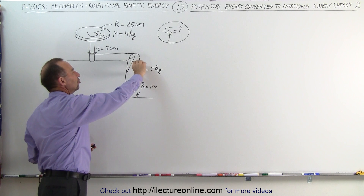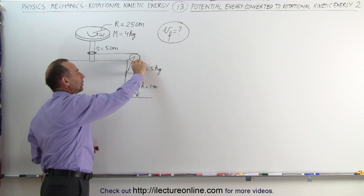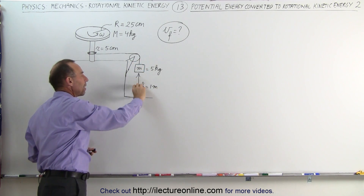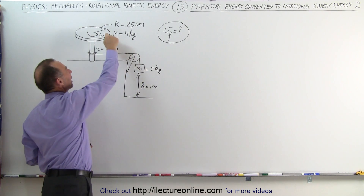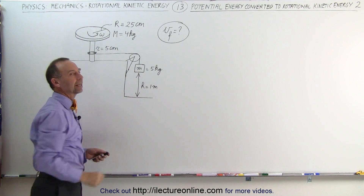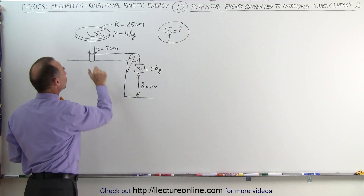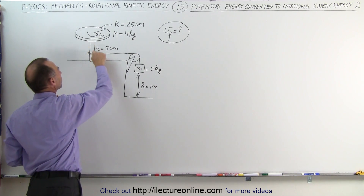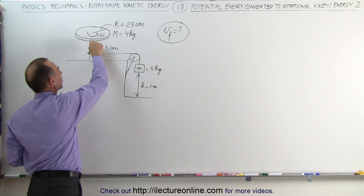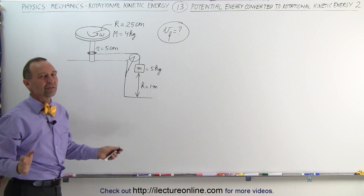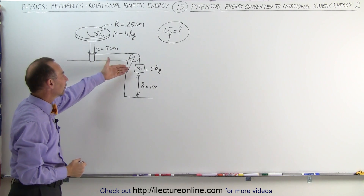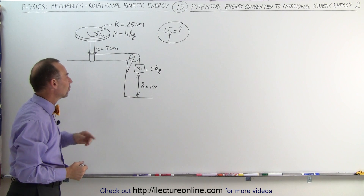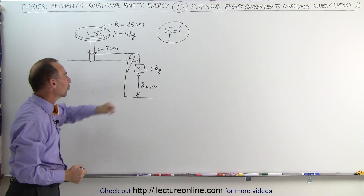Ultimately, the potential energy contained within this mass as it reaches the bottom will be converted into translational kinetic energy for this mass and rotational kinetic energy for the disc. We're going to not include the rotational kinetic energy of the stem, assuming the mass is very small and we can ignore it. So what is the final velocity as this mass reaches the bottom from a height of one meter?